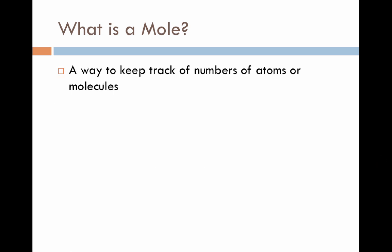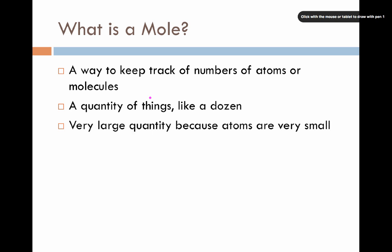So what a mole really is, then, is a way to keep track of a number of molecules or atoms. It's a quantity of things. Just like a dozen equals 12, a mole equals a certain number of things as well, and that certain number has to be very, very large because atoms themselves are very, very small. We want to make sure that the number we're keeping track of is big enough that we'll actually be able to detect it on a balance or scale itself.